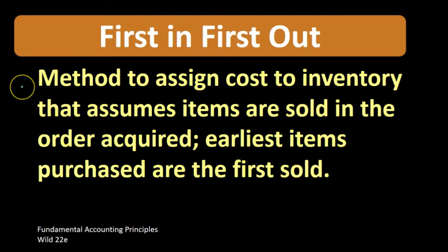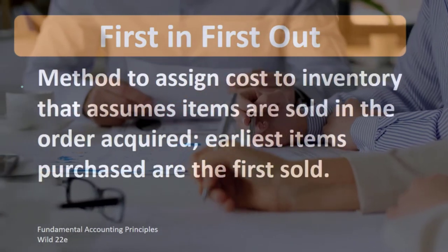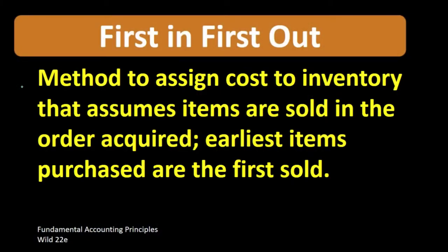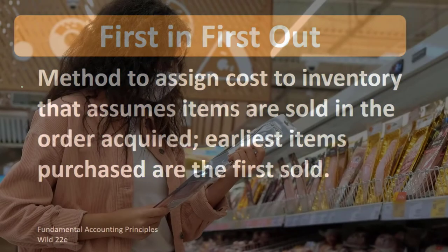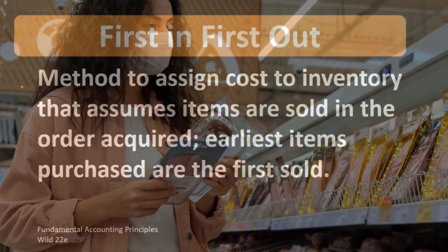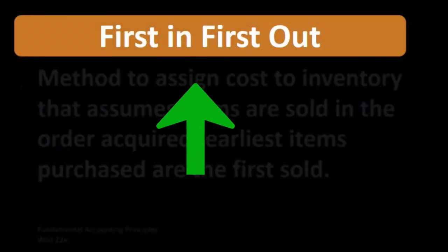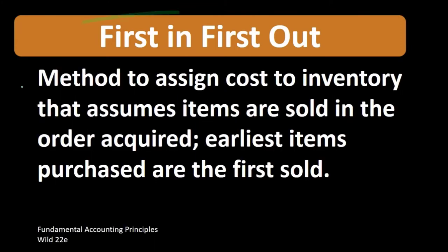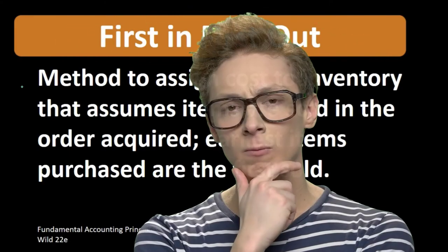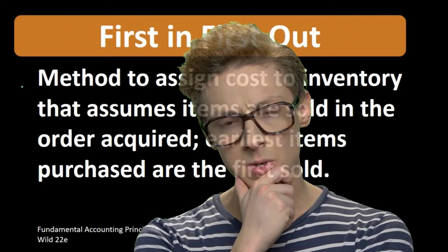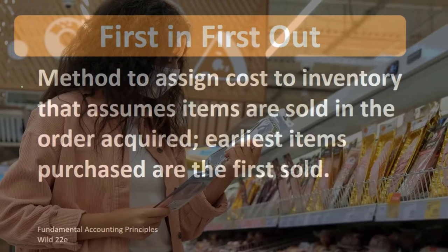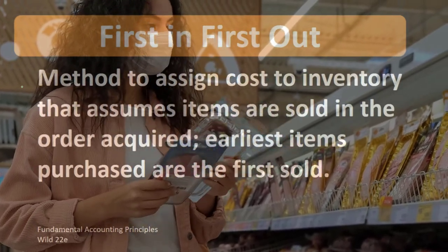So we're talking about a cost flow assumption method — meaning we're not doing specific identification of the cost of specific inventory sold. The assumption is that the items we purchase first are the first ones that we sell. That assumption does not mean that the physical flow happens that way all the time, although FIFO is probably closer to what most would imagine we'd want inventory flow to be.